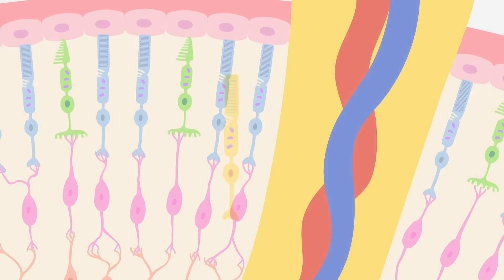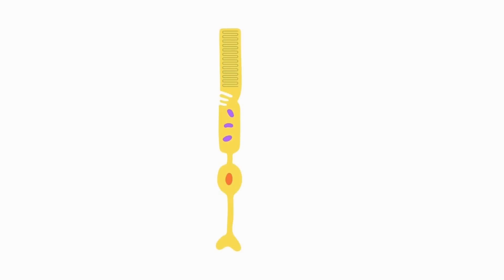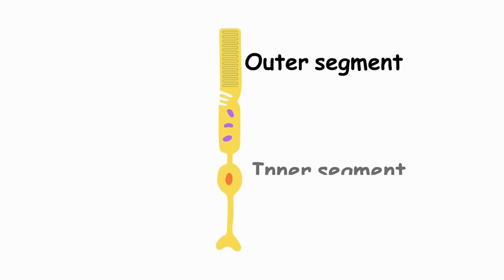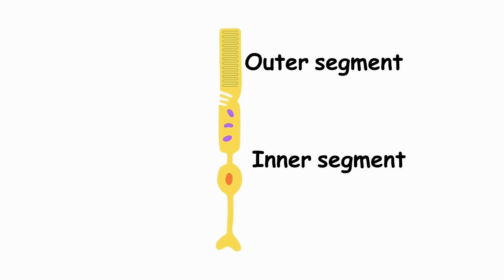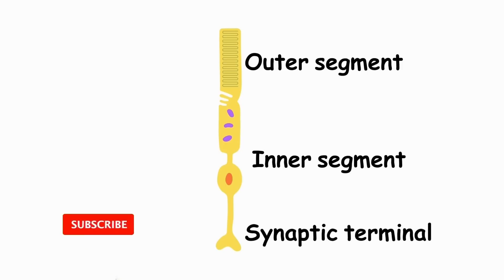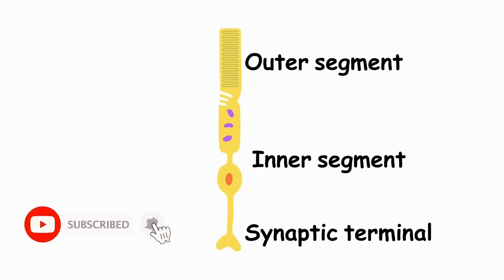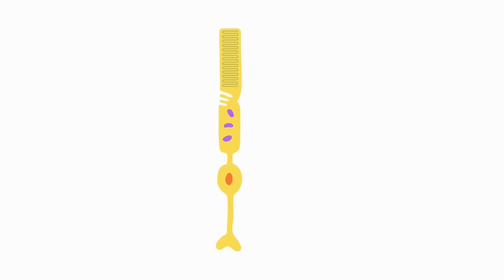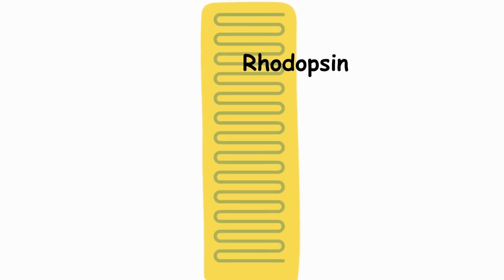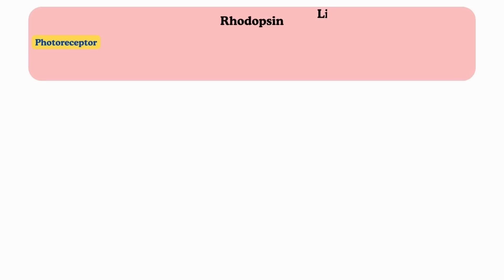Each type of photoreceptor consists of three regions: outer segment, inner segment, and the region of synaptic terminal. Rod cell contains a photolabile pigment, rhodopsin.